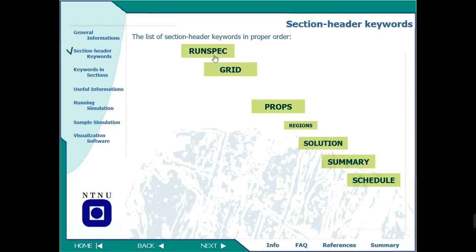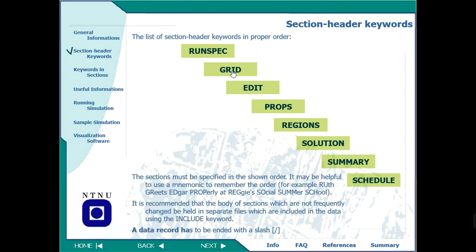Here are the eight sections: we have the RUNSPEC section, GRID section, EDIT section, PROPS section, REGIONS, SOLUTION, SUMMARY, and SCHEDULE — eight sections in total. They must be specified in order: RUNSPEC from the top cannot go to the bottom, and SCHEDULE from the bottom cannot go to the top. So they have to be in order and we have to remember them and their functions.